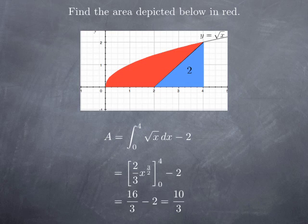So, when I plug 4 in x to the 3 half, I get 4 to the 1 half, that's 2, that I cube, that's 8, multiply by 2 thirds, that gives me 16 thirds, I subtract 2, which is 6 thirds, and I get 10 thirds.